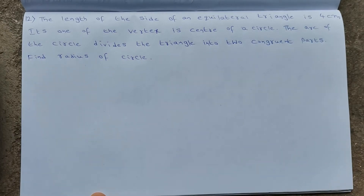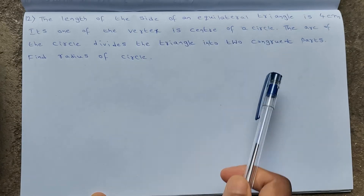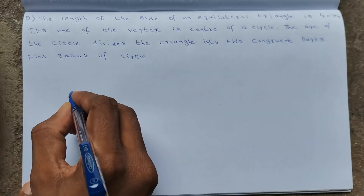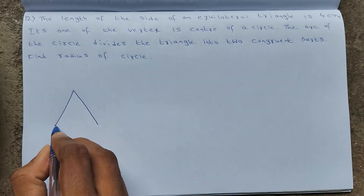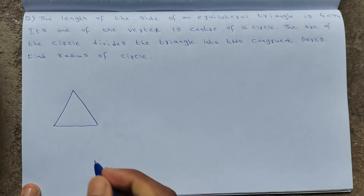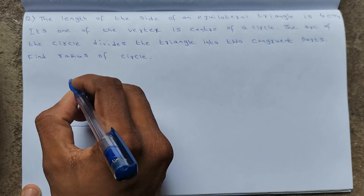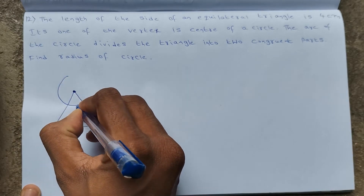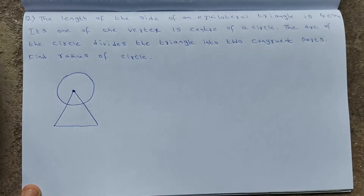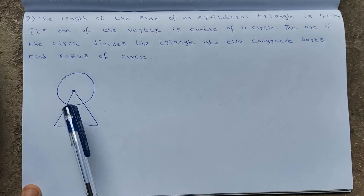The next question: the length of the side of an equilateral triangle is 4 centimeters. One of the vertices is the center of a circle. We have an equilateral triangle, and one of the vertices is the center of the circle — for example, taking this vertex as the center, the circle is centered there.